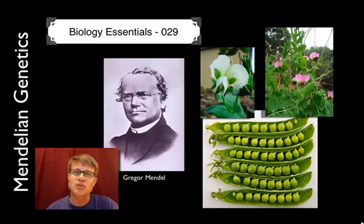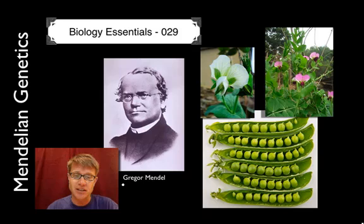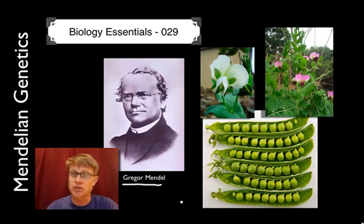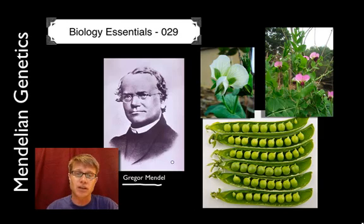Hi, it's Mr. Andersen and welcome to Biology Essentials video 29. This is on Mendelian genetics, named after Gregor Mendel. In biology there are two famous names: Darwin, who was famous and controversial in his own time, and Gregor Mendel, who died in obscurity. But both of them made huge advances in the field of biology, and Gregor Mendel specifically in the area of genetics.